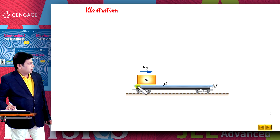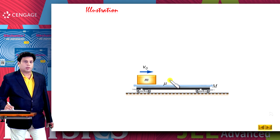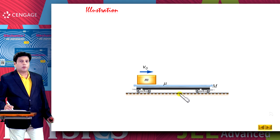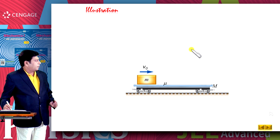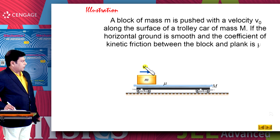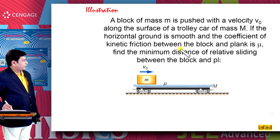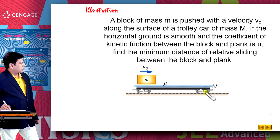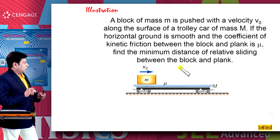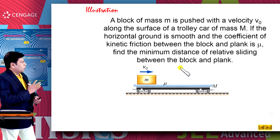Let us take one more illustration. There is a block of mass small m placed on a trolley, and there is friction between the trolley and block. The trolley has mass capital M and there is no friction between the trolley and ground. A block of mass m is pushed with velocity v naught on the rough surface of the trolley, and we need to find the minimum distance of relative sliding between the block and the trolley.